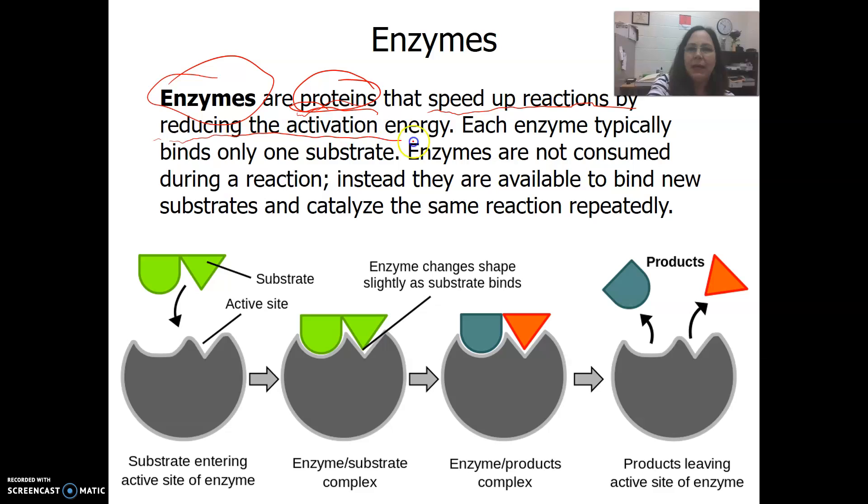So for every chemical reaction, there's a certain amount of energy that's needed in order for that reaction to occur, whether it's catabolic or anabolic. It doesn't matter. Breakdown or buildup reaction or synthesis reaction. It doesn't matter. There's some amount of energy called activation energy that's required for that chemical reaction to actually occur. So enzymes lower that energy.